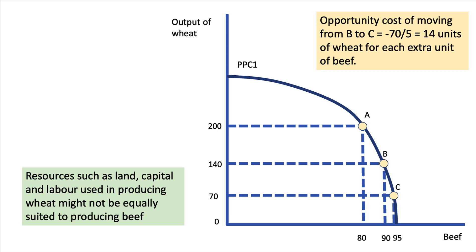For example, the opportunity cost of moving from B to point C, where we get 5 extra units of beef but have to sacrifice 70 units of wheat, is an opportunity cost per extra unit of beef of 14. The same effect of increasing opportunity cost will be seen if we reallocate resources away from beef towards wheat, because of the shape of the curve. The idea of this non-linear concave PPF is that resources such as land, capital and labour are not necessarily equally suited to producing wheat and beef.